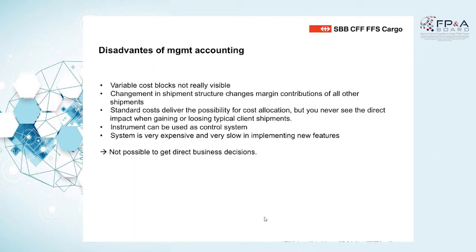The problem is what we have at the end: we have a precise cost allocation of our system, but the variable costs are not visible. We don't know exactly what is happening when we lose, for example, a shipment of a customer, or if we acquire a new customer. We don't know whether we have to put in a new train or if we can use existing trains. So we can't say exactly what is happening in the business — we have exact costs but we can't say what happens when we make business decisions. This is the drawback.